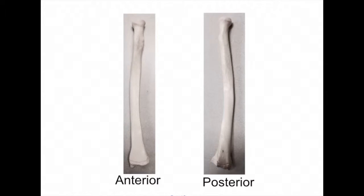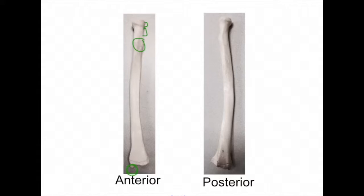Now we are looking at the anterior and posterior views of the radius. Here is the head of the radius, followed by the neck of the radius, and the radial tuberosity located here. Looking distally, we can see the radial styloid process. Located here on the posterior view, we can see the ulnar notch of the radius, where the head of the ulna will articulate with the radius.